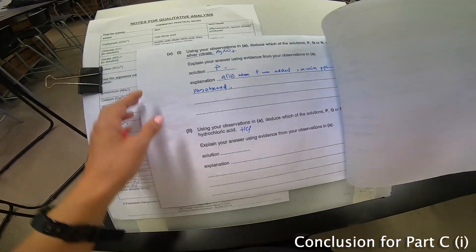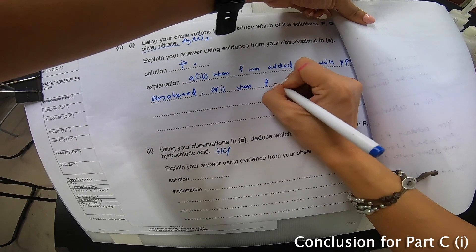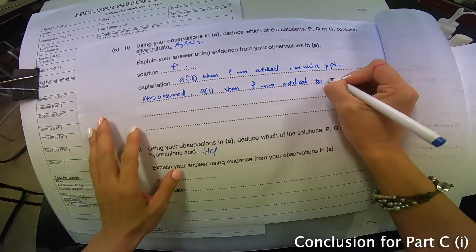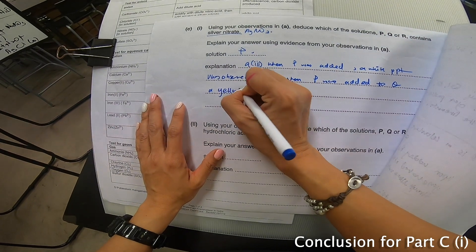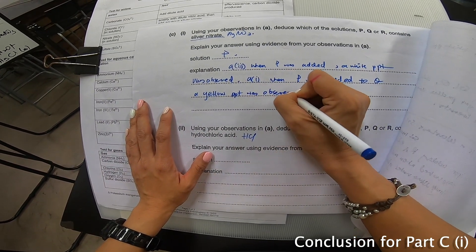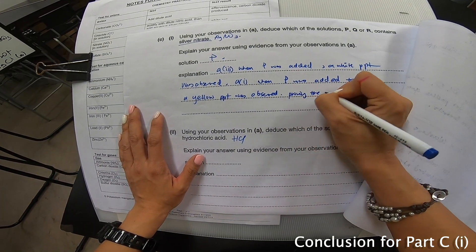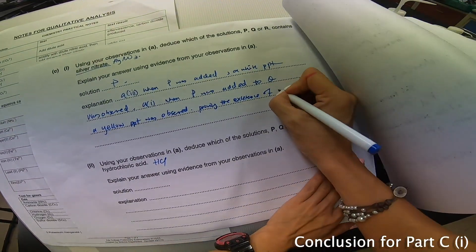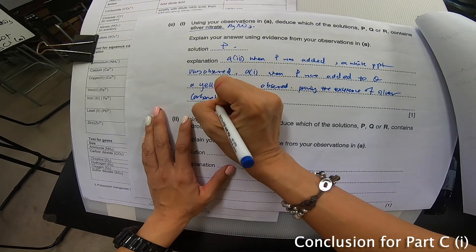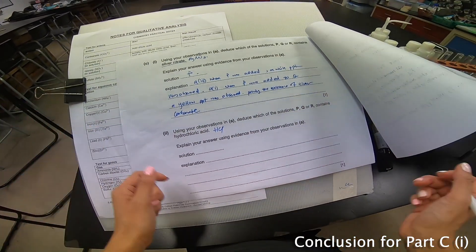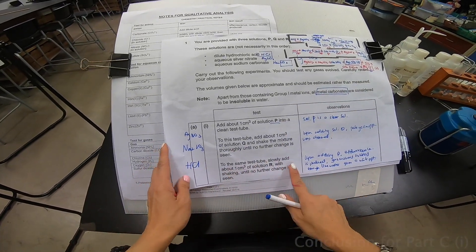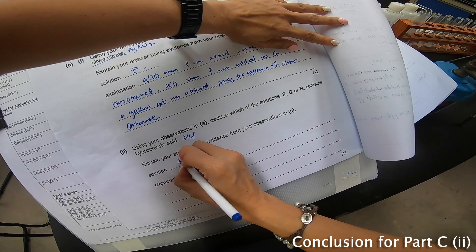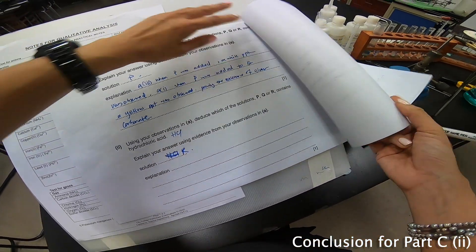All right. So, I can also say over here in A part 1. When P was added to Q, a yellow PPT was observed. Proving the existence of who? According to my equation is what? Silver carbonate. And I will write silver carbonate. And I write so much for one mark. Never mind. Let's move on. So, and from here, I can know that actually my R is my HCl. So, over here, it will help me to solve for this. My R is actually my HCl. Is R. Sorry. Solution R. Explanation. Solution.